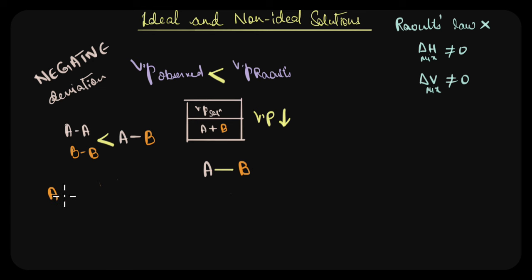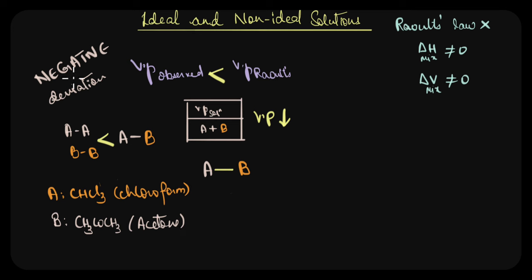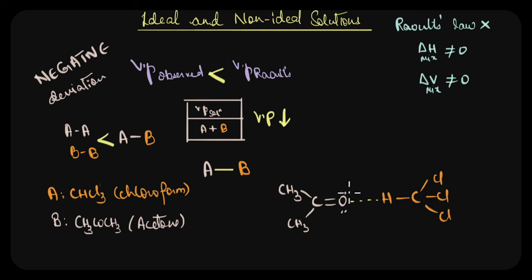An example of negative deviation is a mixture of chloroform (CHCl₃) and acetone (CH₃COCH₃). When mixed, chloroform forms hydrogen bonds with acetone — the electronegative oxygen of acetone forms hydrogen bonds with the acidic hydrogen of chloroform. This hydrogen is acidic because its alpha carbon is bonded to three highly electronegative chlorine atoms, which draw electron density away and make the hydrogen highly acidic. This strong hydrogen bonding decreases the escaping tendency of the molecules, lowering vapor pressure and giving negative deviation from Raoult's law.